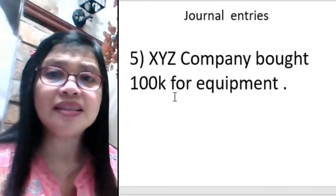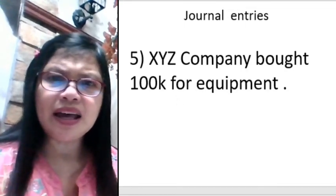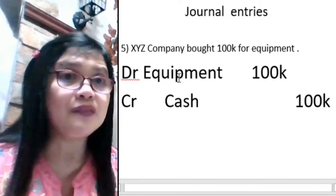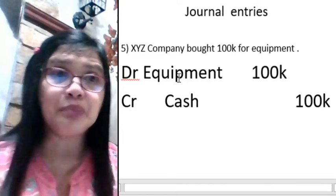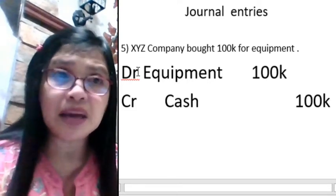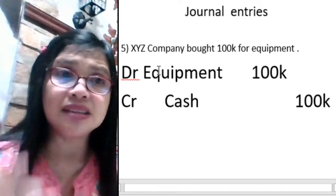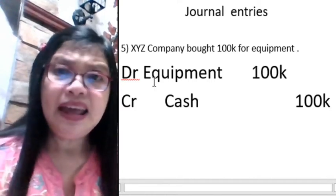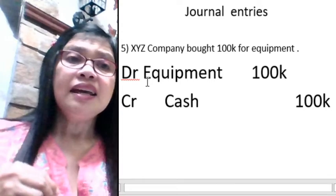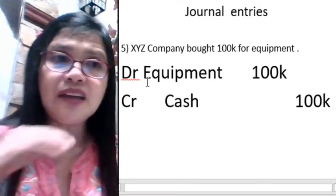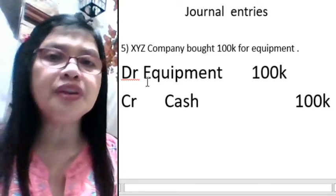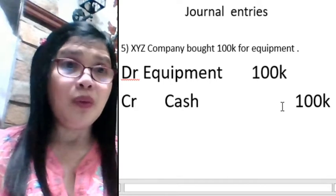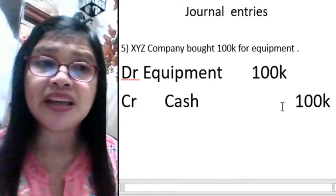XYZ bought equipment for 100,000. When XYZ bought equipment, the company received equipment — so debit equipment 100,000, because that is what the company received. Since they bought equipment, they reduced their cash by releasing 100,000 — so credit cash 100,000.